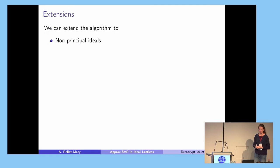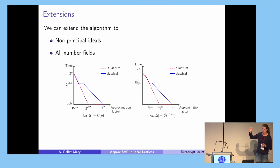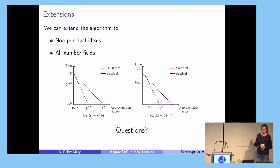We can generalize from power-of-two cyclotomic fields and principal ideals to non-principal ideals and all number fields. When the discriminant is quasi-linear in the degree the picture is nearly the same, except the classical plateau is slightly higher since computing a generator in any number field takes 2^(n^(2/3)) time. When the discriminant grows faster than quasi-linear, the trade-off degrades, eventually no better than BKZ.